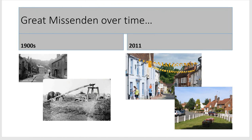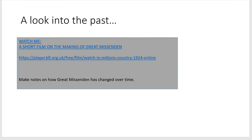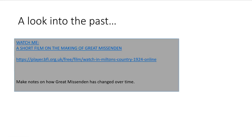Let's look at some photographic evidence of how Great Missenden has changed over time — moving from a predominantly agricultural town to one that relies heavily on tourism and the service sector, as seen in the images. Pause the video here and watch this short film of the making of Great Missenden, making notes on how you can visually see it changing over time.